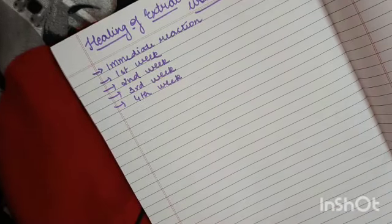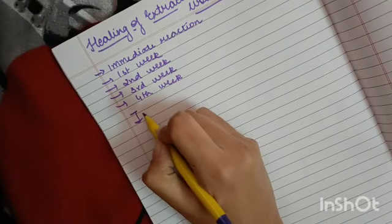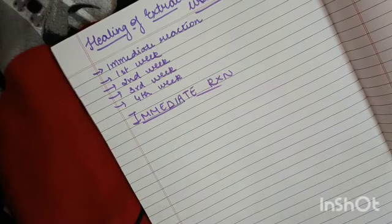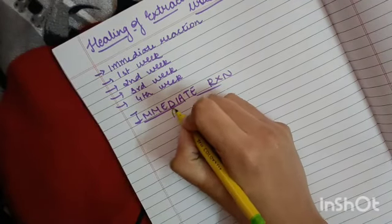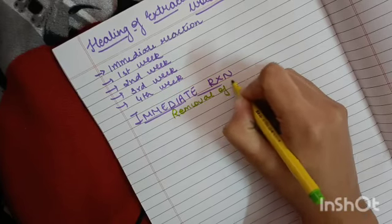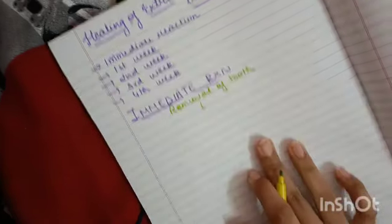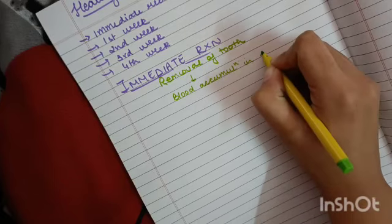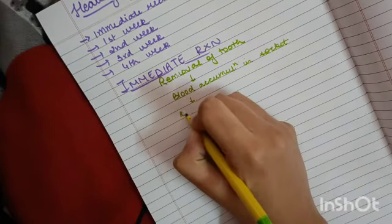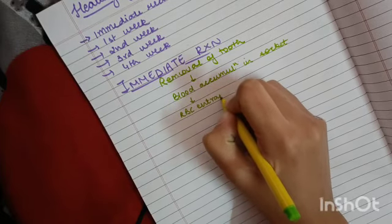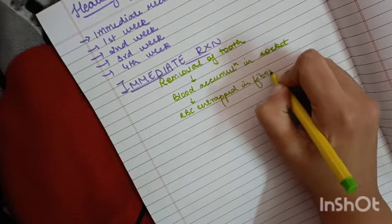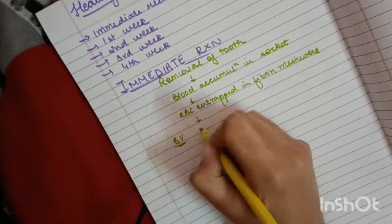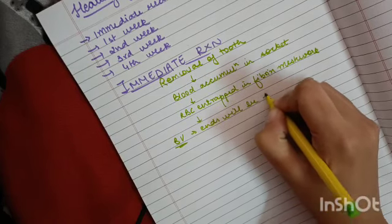Now let's discuss the immediate reaction. As the tooth is removed, it is followed by blood accumulation in the socket. The RBCs are entrapped in fibrin meshwork, and the blood vessel ends will be sealed off.